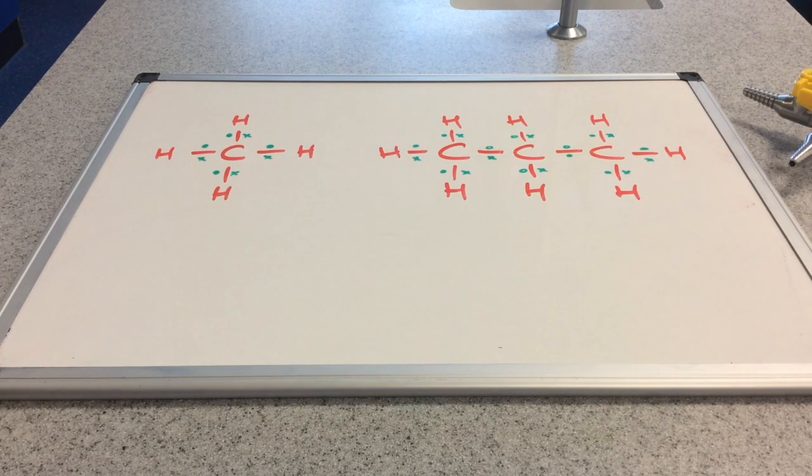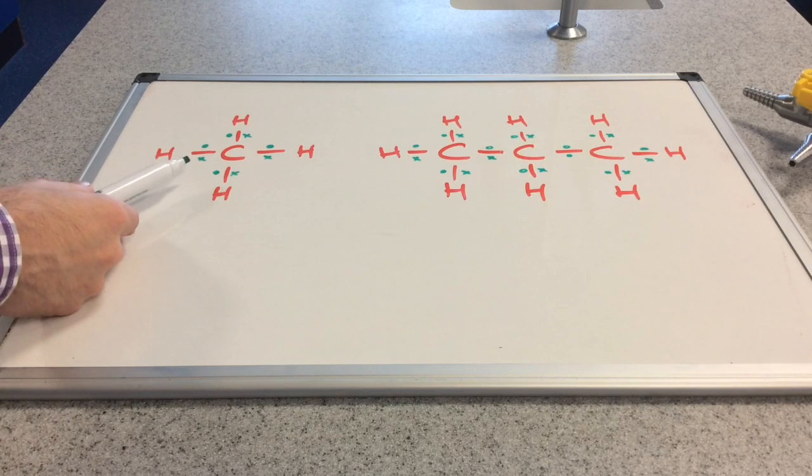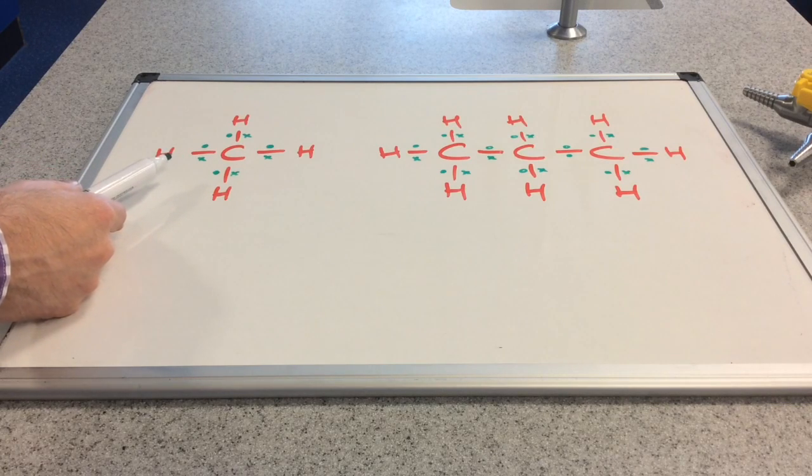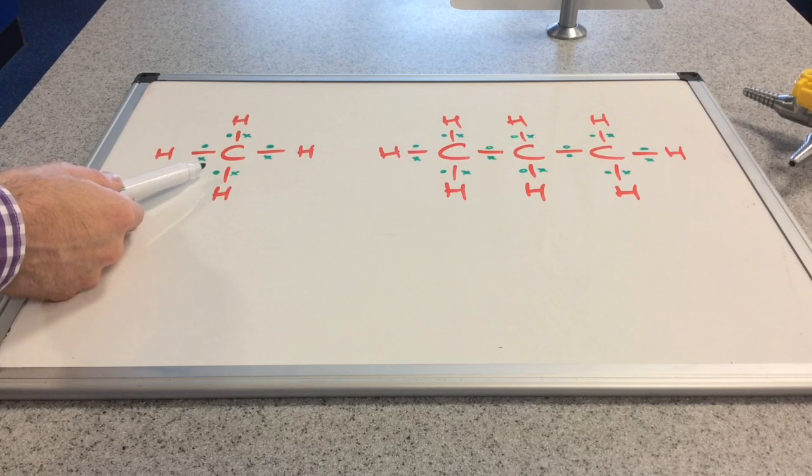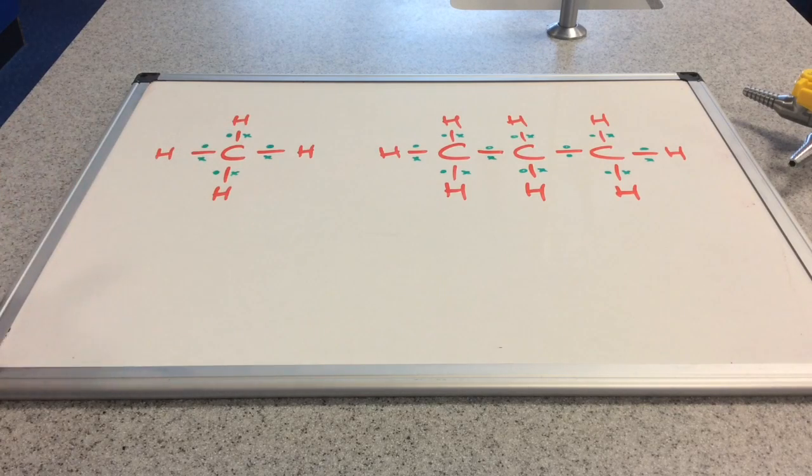And you can see that very clearly in these two diagrams. If we look at the displayed formula for methane first, the carbon electrons are represented as these green dots. We've got one, two, three, four, and that backs up what we've just said.